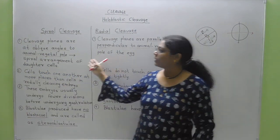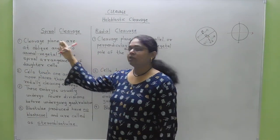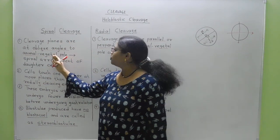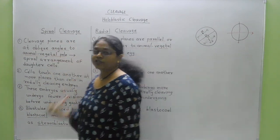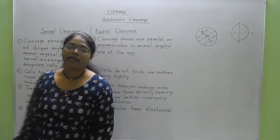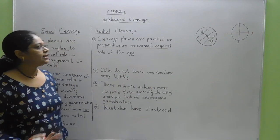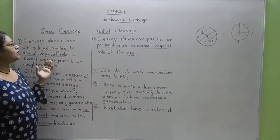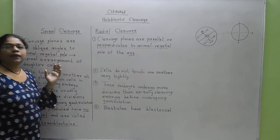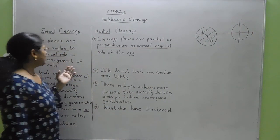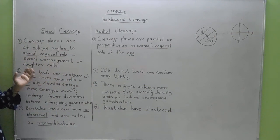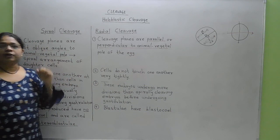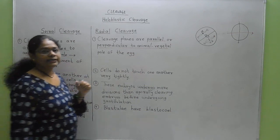So the main difference between spiral and radial cleavage is that in radial cleavage the cleavage axis is either parallel or perpendicular, whereas in spiral cleavage the cleavage planes are at oblique angles to the animal and vegetal poles of the egg. Why is this the case?